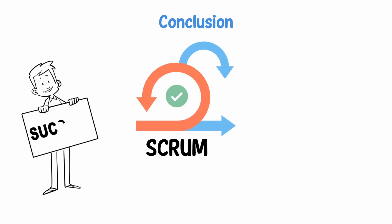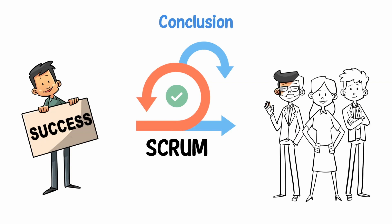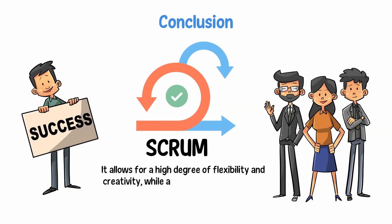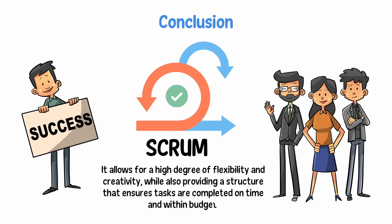In conclusion, Scrum is an agile framework that has been proven to be successful in software development. It is a simple yet powerful process that can be used by teams of all sizes. By using Scrum, you can improve your productivity and get your products to market faster. It allows for a high degree of flexibility and creativity, while also providing a structure that ensures tasks are completed on time and within budget.